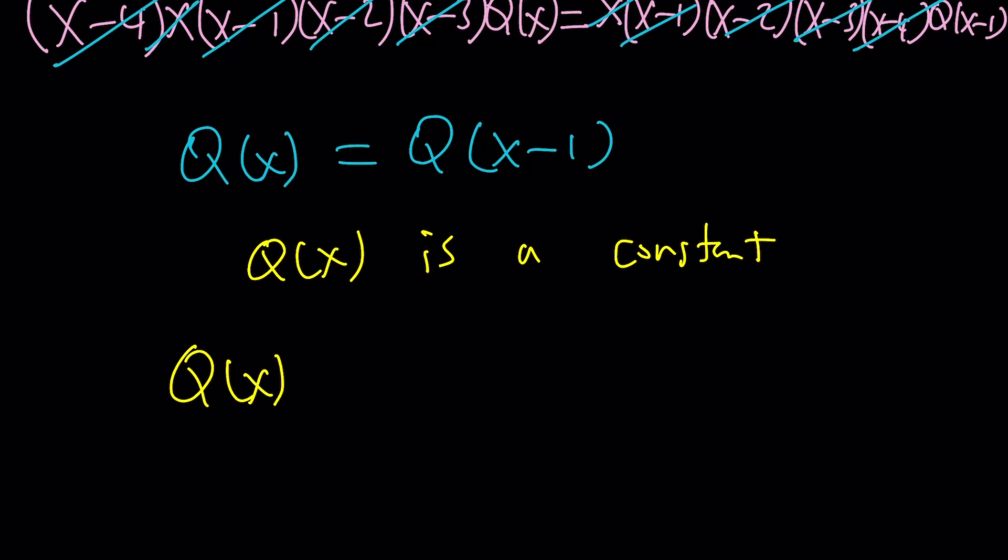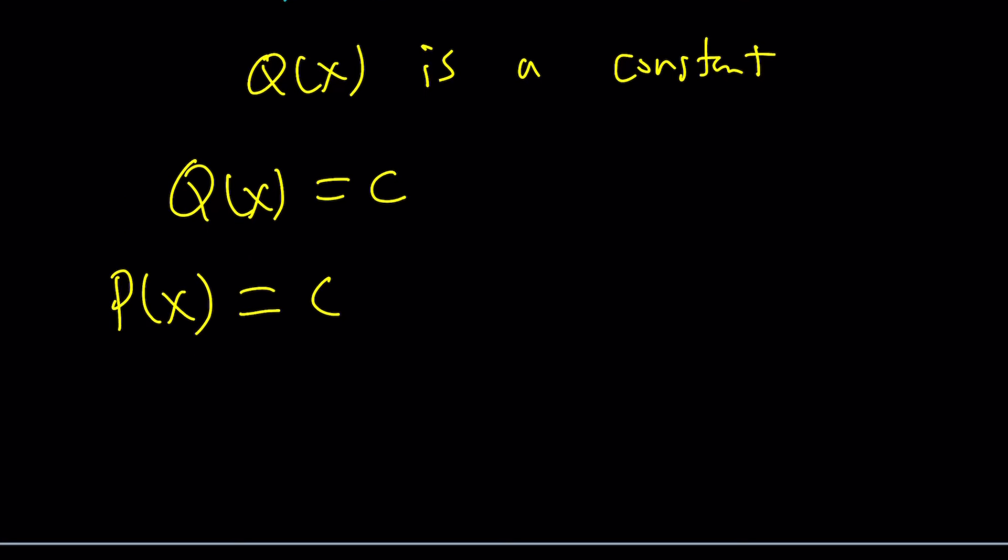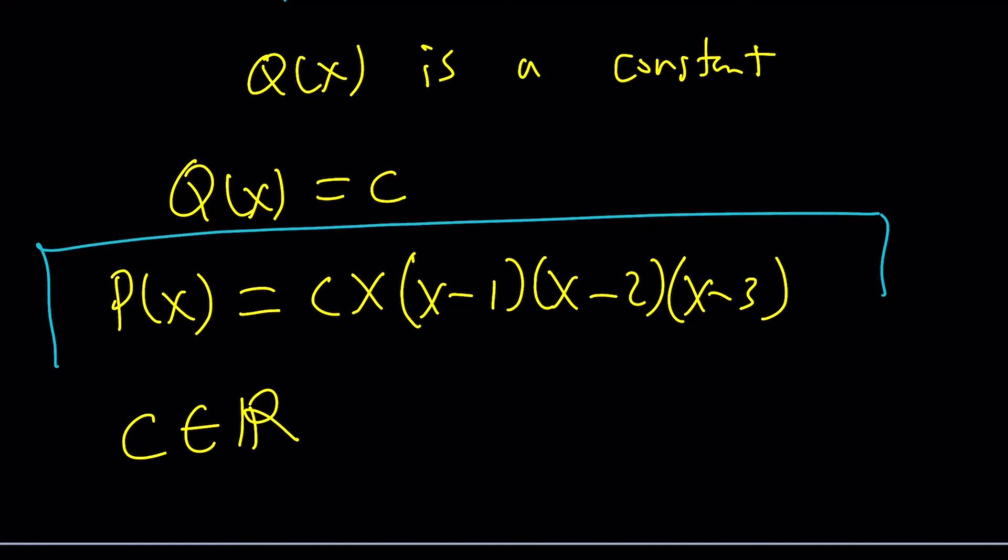And then, going back to my equation for P of X, I can now write P of X as a constant times X times X minus 1 times X minus 2 times X minus 3. And that's pretty much it. C is a real number, a real constant. And, basically, that's P of X. Now, you can go ahead and plug it into the original one, and you'll see that it satisfies.